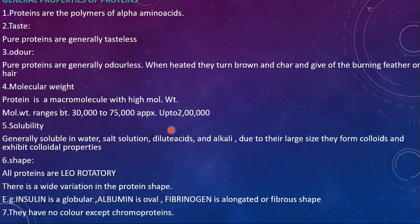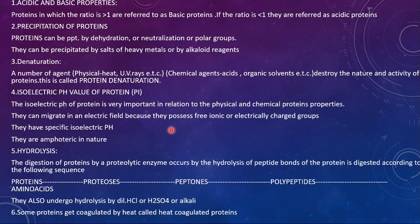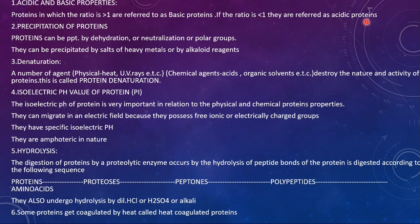Now let's move to the second type of properties — chemical properties. Coming to acidic and basic properties: proteins in which the ratio is greater than one are referred to as basic proteins, and if the ratio is less than one, they are referred to as acidic proteins.